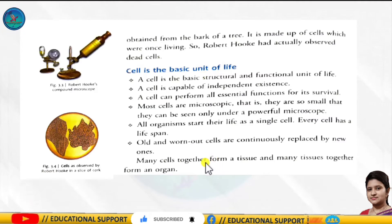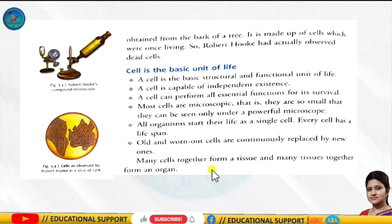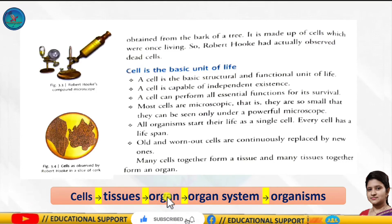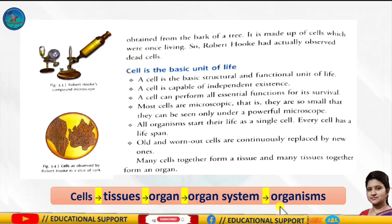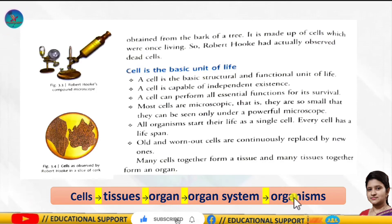New cells arise from pre-existing cells. Many cells together form a tissue, many tissues together form an organ, many organs form an organ system, and many organ systems together form an organism.